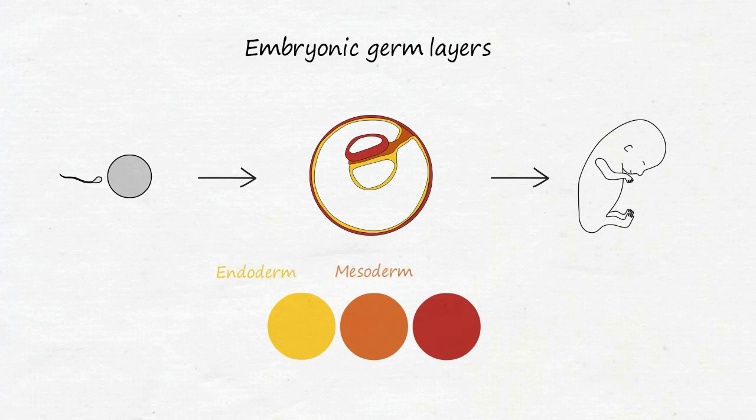Each tissue thus comes from one of the three germ layers: endoderm, mesoderm, or ectoderm. The mesoderm is then divided once more into old mesoderm and new mesoderm.